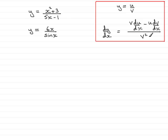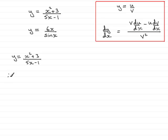So let's see how this works. We'll have a go at the first one here. It's a fairly basic example but well worth trying. So we'll put it down as y equals x squared plus 3, all divided by 5x minus 1. So we have two functions of x — u is the top and v is the bottom. So according to the formula, dy by dx would equal v, which is the bottom of the fraction. So that's going to be 5x minus 1.